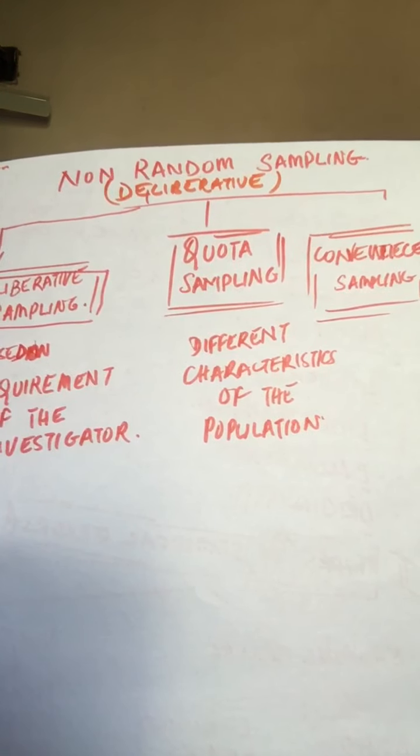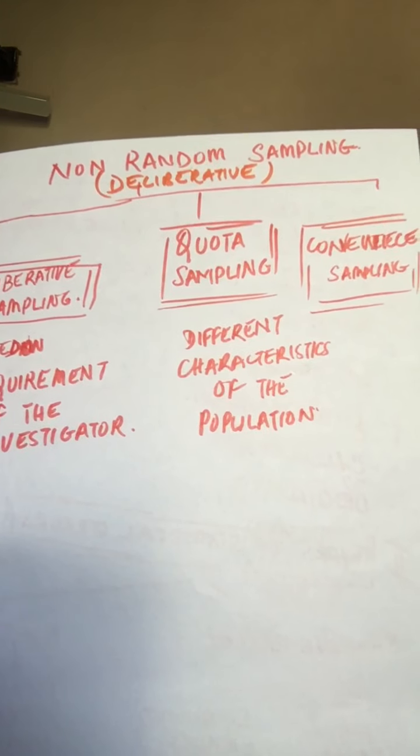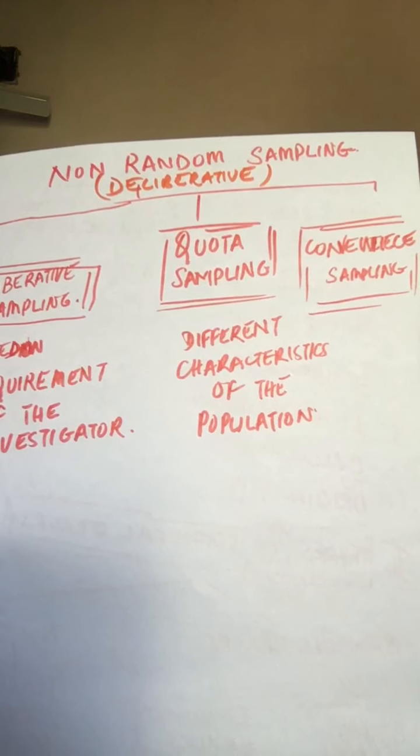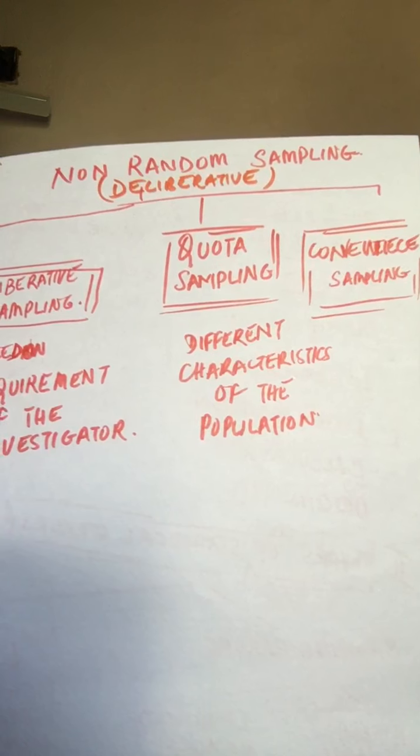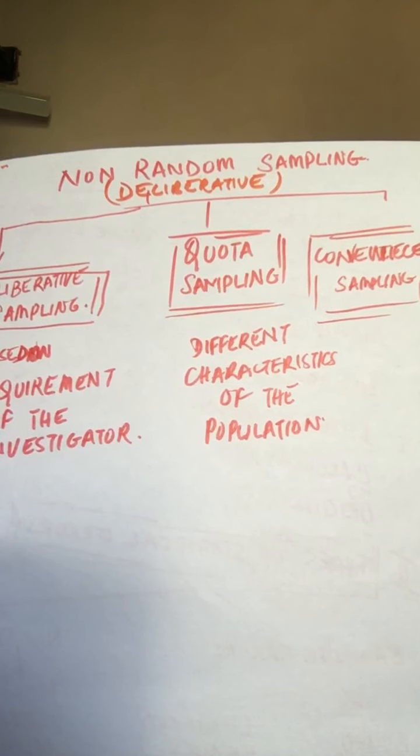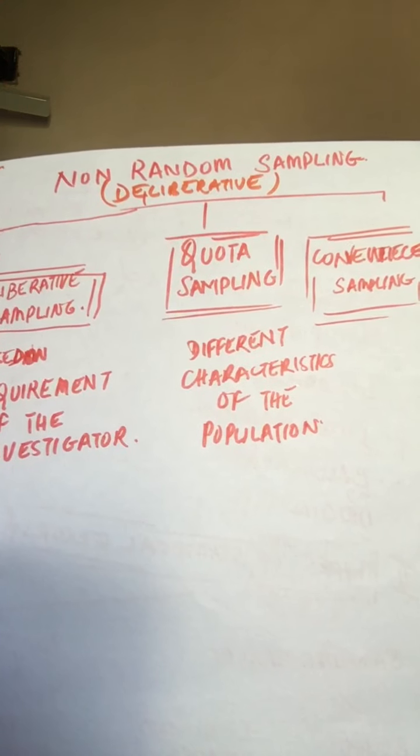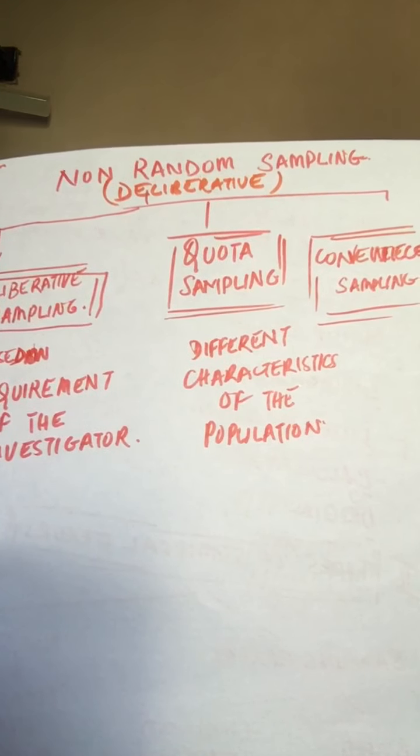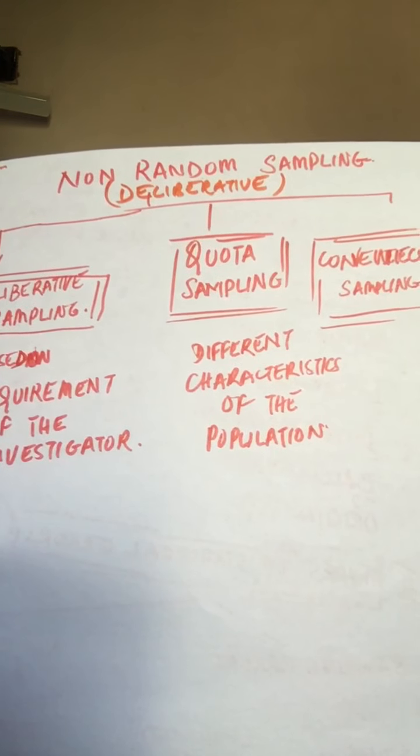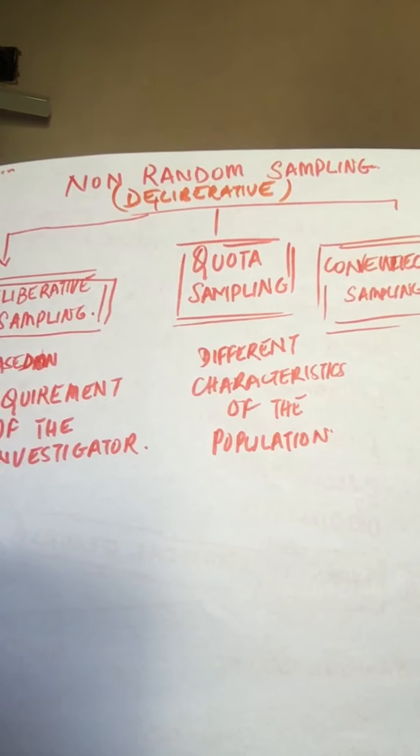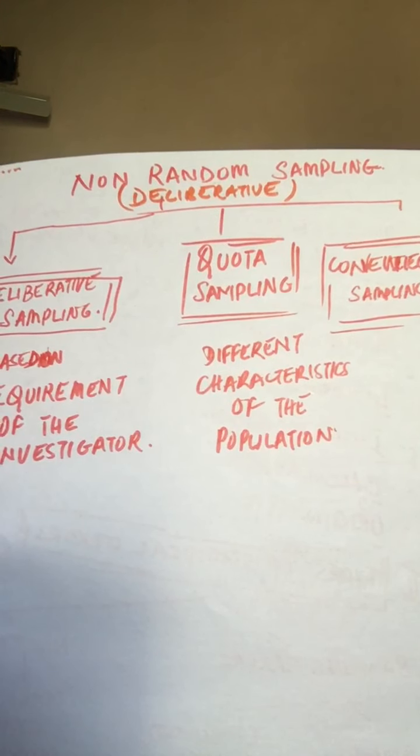Under this method, the sample units are selected by the investigator according to his convenience, whatever he feels like. For example, you want to find out how many households are using mother dairy milk or other milk.